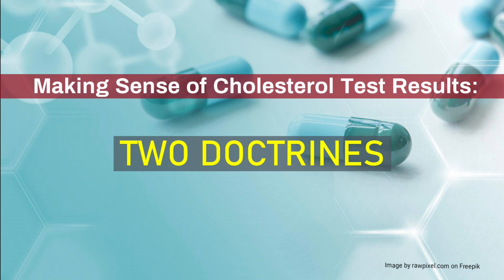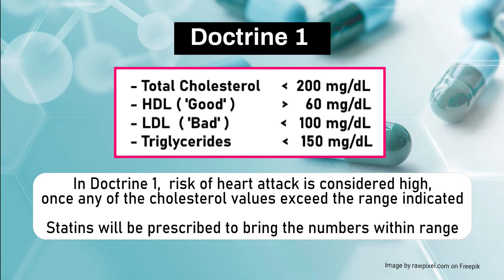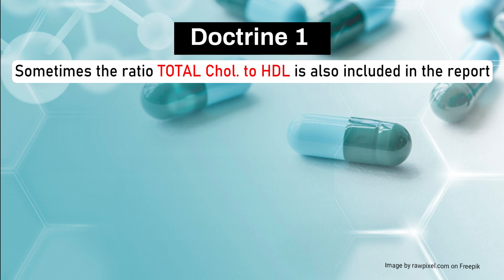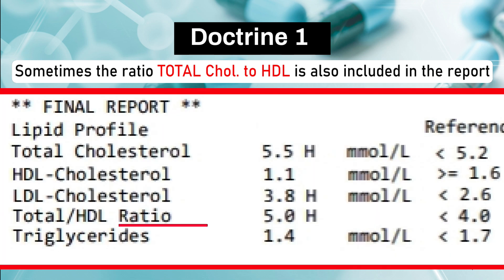In Doctrine 1, the risk of heart attack is considered high once any of the cholesterol values exceed the indicated range. Statins will be prescribed to bring the numbers within range. Sometimes, the ratio of total cholesterol to HDL is also included in the report.